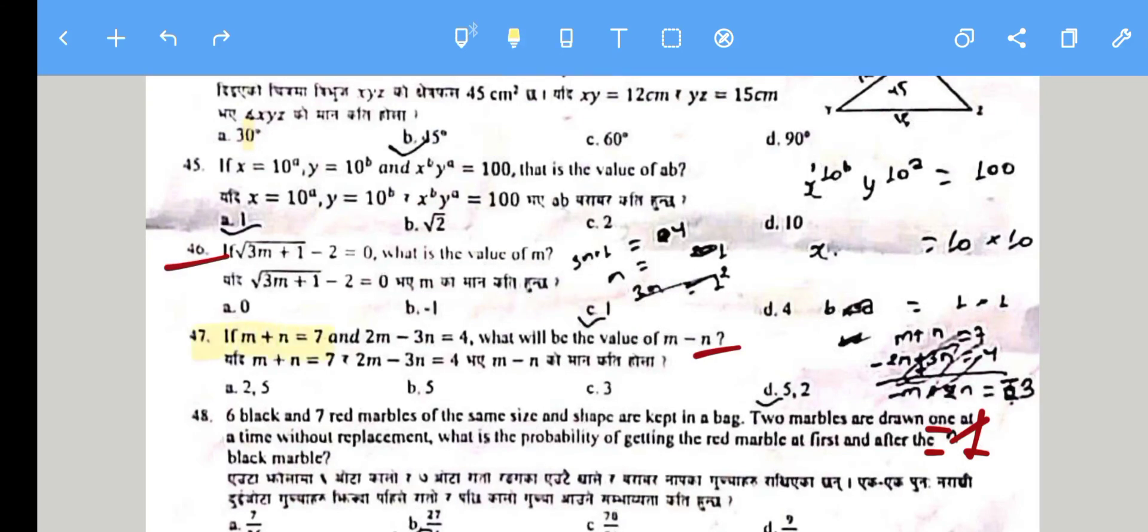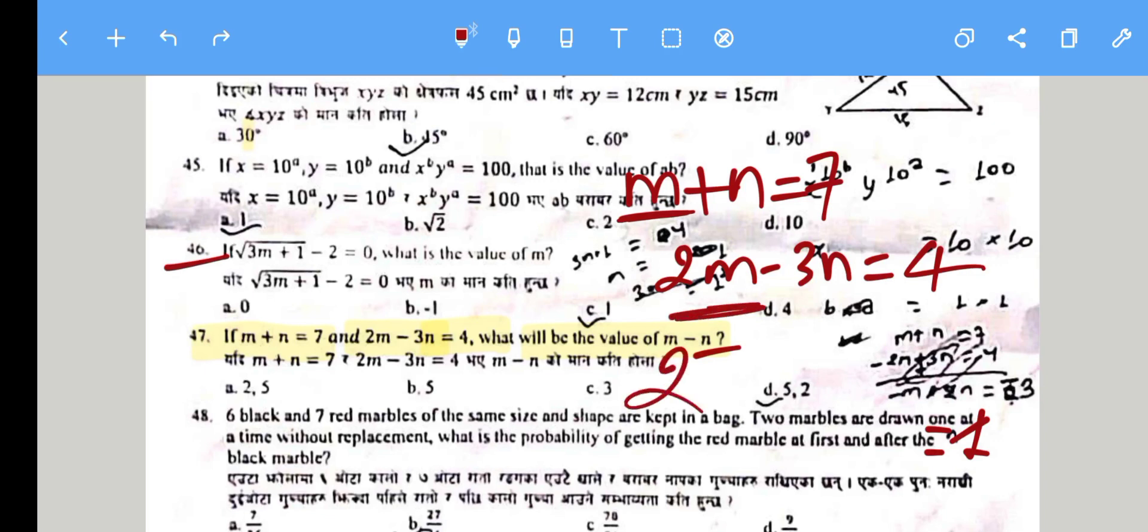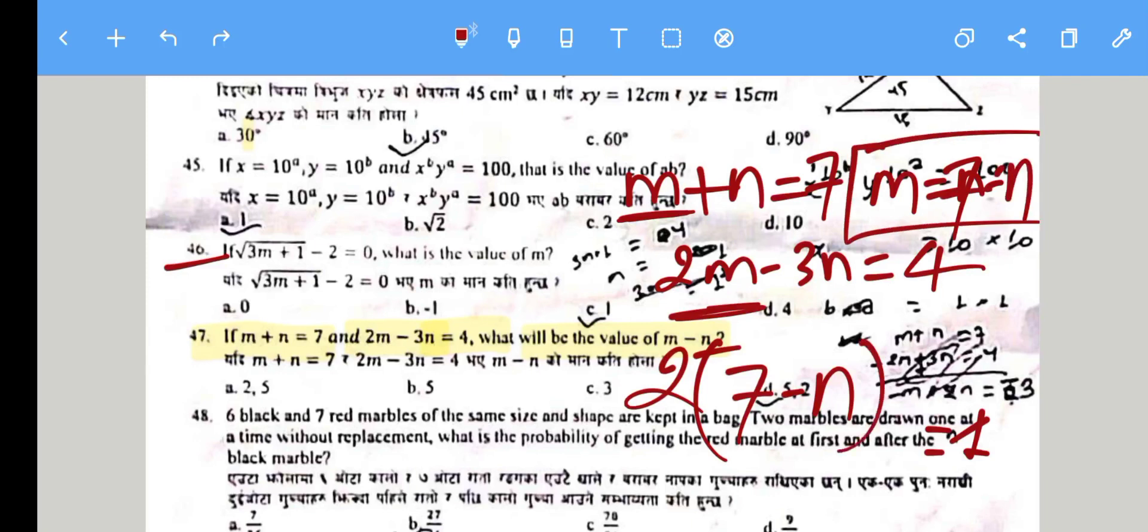Question 46: If x + y = 7 and 2x - 3y = 4, find x - y. From the first equation, x = 7 - y. Substituting into the second equation: 2(7 - y) - 3y = 4.